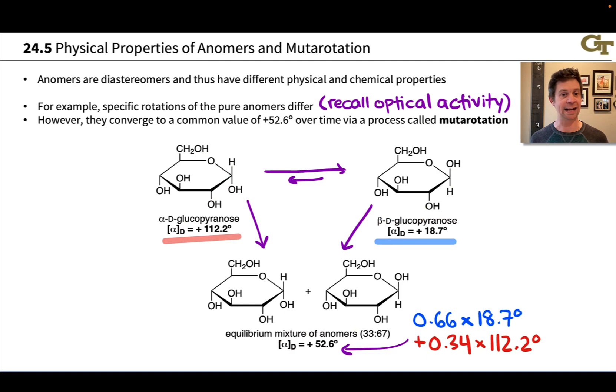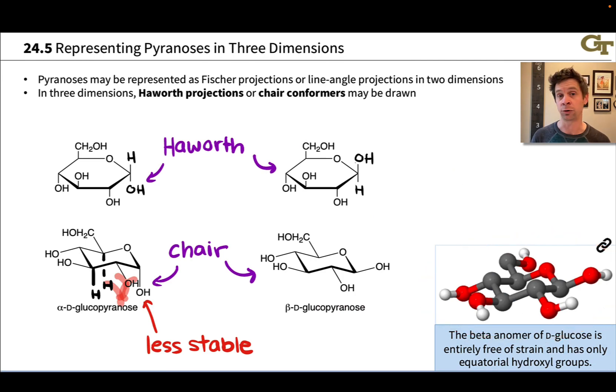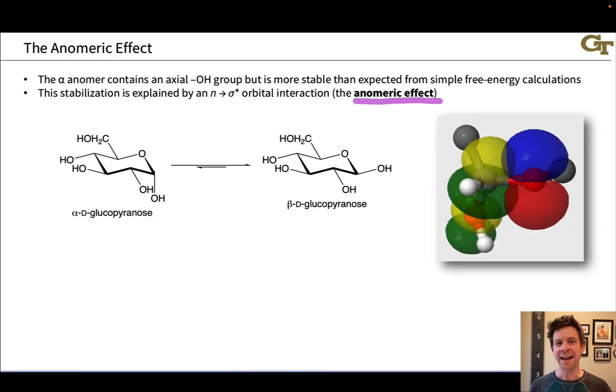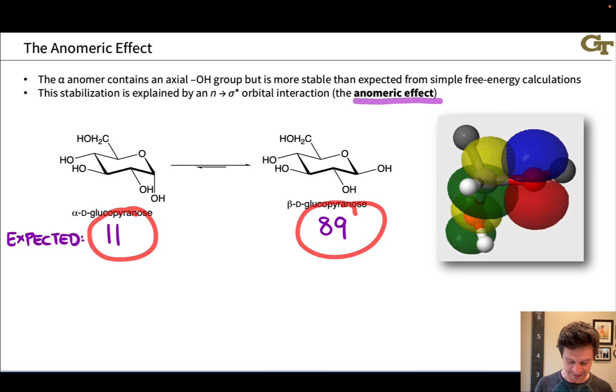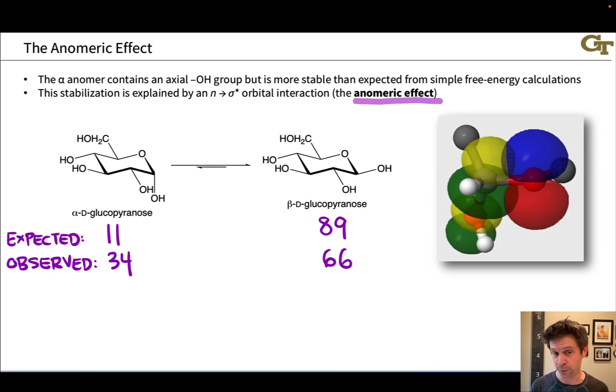So we've got more beta anomer than alpha anomer, for example, and we talked about the reasons for that on the last slide, having to do with the fact that in the beta anomer, we've got all equatorial hydroxyl groups if we're talking about glucose. We can actually make an interesting observation of this basically two to one ratio of the beta anomer to the alpha anomer in glucopyranose. The expected ratio is quite a bit more in favor of the beta anomer based on pretty simple calculations. For example, based on the cyclohexane A value for the hydroxyl group, the difference in stability of an axial versus an equatorial OH group in something like cyclohexanol, we'd expect something more along the lines of 9 to 1 or 89 to 11 at equilibrium. What we actually observe is quite a bit more alpha anomer, something like 66 beta to 34 alpha.